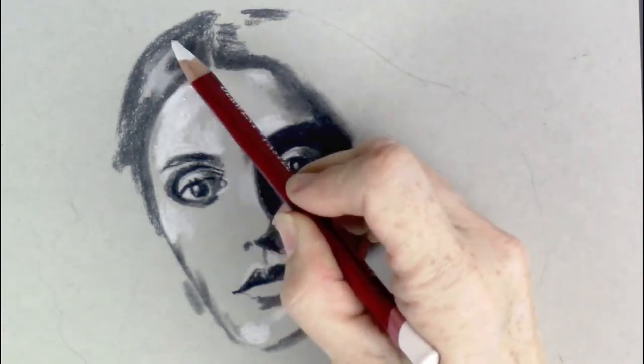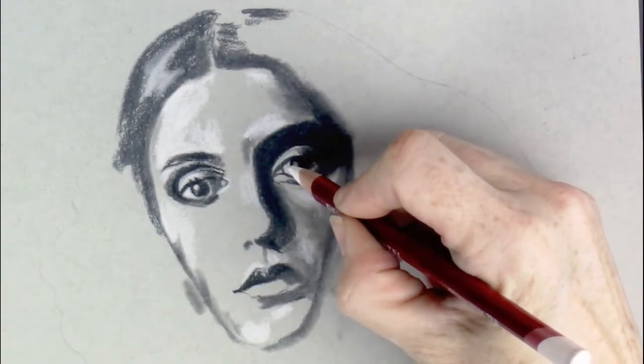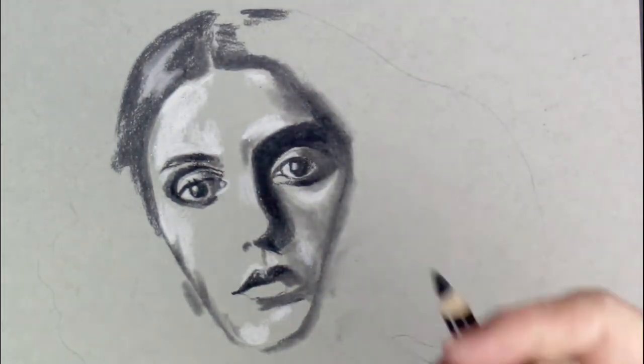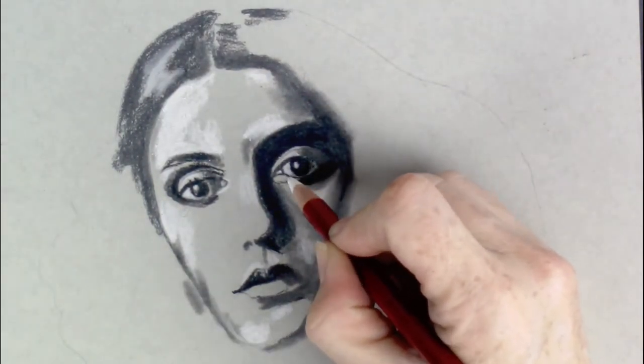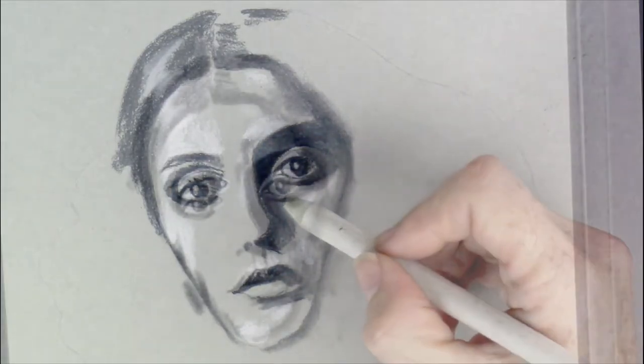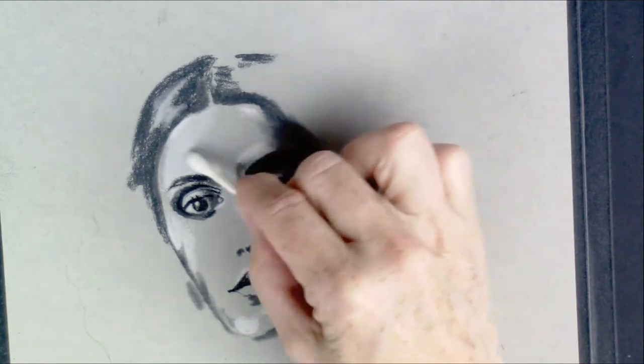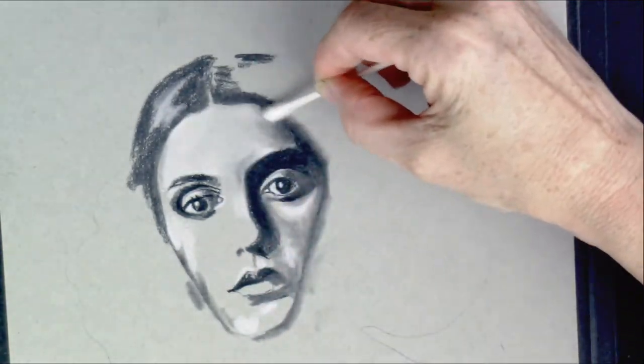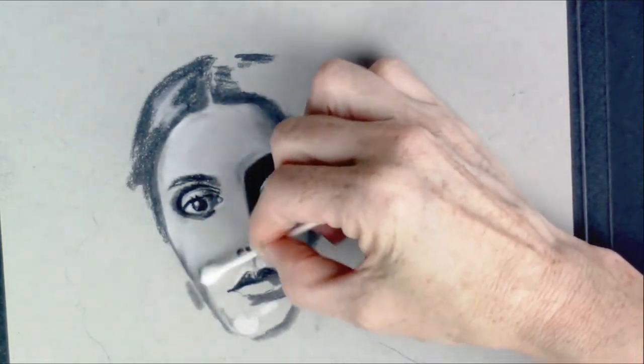All of these areas that I'm putting in now will be smoothed out at a later point. So for now, what I'm doing is I'm looking at my reference material, squinting with my eyes and paying attention to where the light falls on the model's face. You'll see that the light source is coming from the left hand side, whereas the right hand side of the image is more in shadow and in darkness.